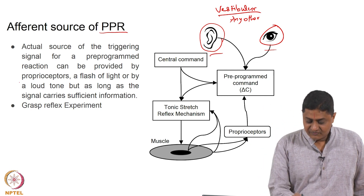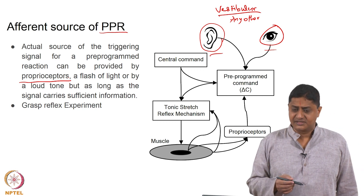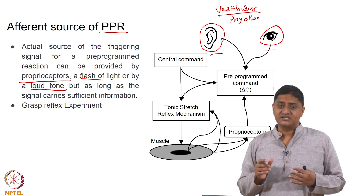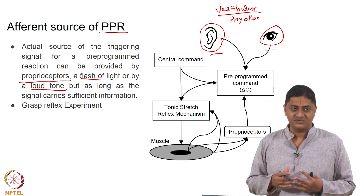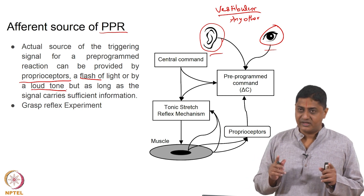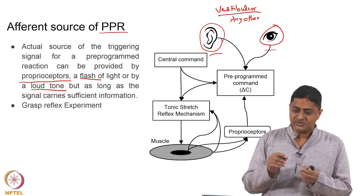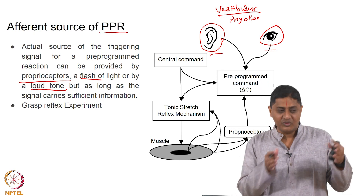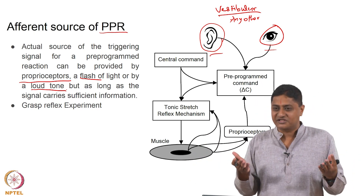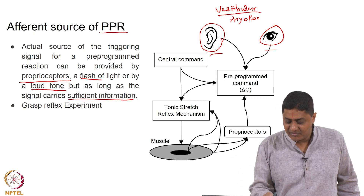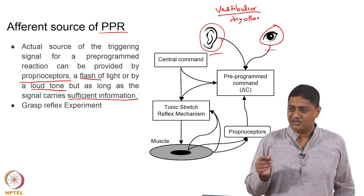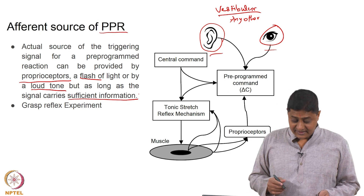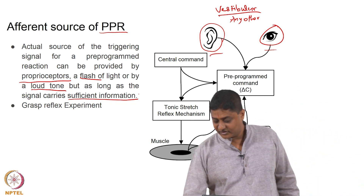The afferent source of pre-programmed reactions can be proprioceptors such as muscle spindles and Golgi tendon organs, or a flash of light or a loud tone. However, the signal must carry sufficient information to distinguish which trigger it is. The response amplitude will not change with stimulus amplitude, but there must be enough information to distinguish between different stimuli — for example, which direction to move — otherwise there will only be confusion. As long as there is sufficient information, the stimulus acts as a switch and a response is facilitated.